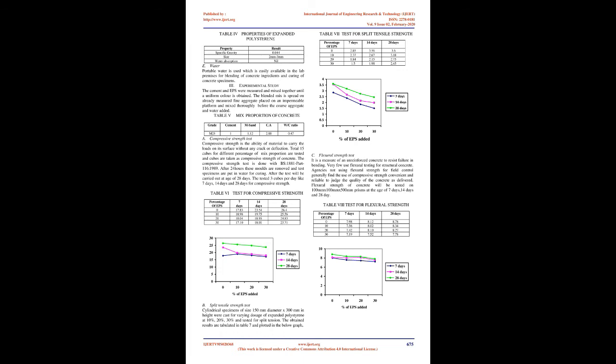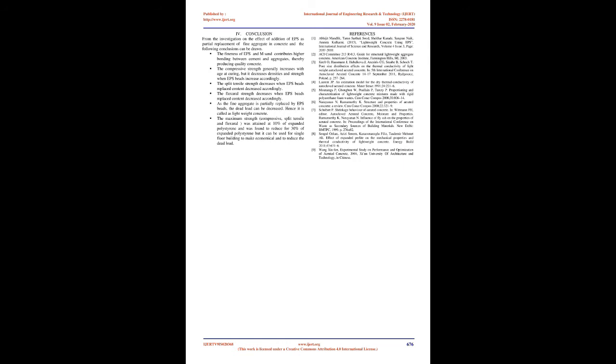Experimental Study: The cement and EPS were measured and mixed together until a uniform color is obtained. The blended mix is spread on already measured fine aggregate placed on an impermeable platform and mixed thoroughly before coarse aggregate and water are added. Compressive Strength Test: Compressive strength is the ability of a material to carry loads on its surface without any crack or deflection. A total of 15 cubes for different percentages of mix proportion are tested. The compressive strength test is done per BS 1881, Part 116, 1989. After 24 hours, molds are removed and test specimens are put in water for curing, with tests carried out at 28 days.